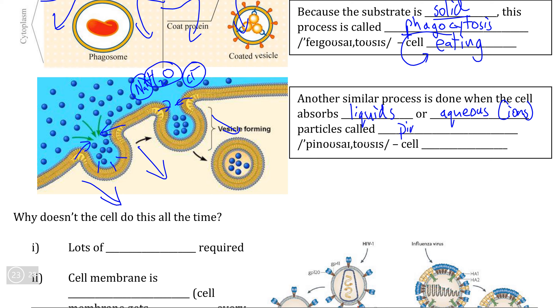And this process is what we call pinocytosis, pinot being the Greek prefix referring to drink. We refer to this as cell drinking because of the liquid or aqueous components that are being pulled into the cell.